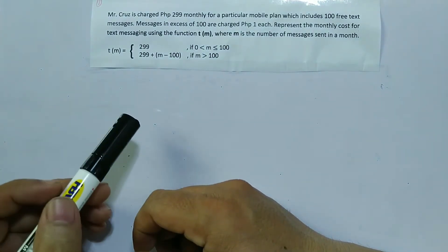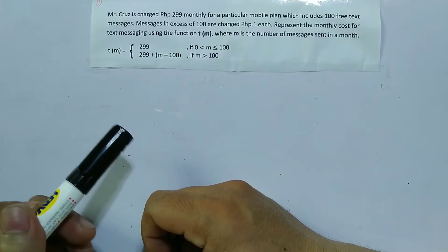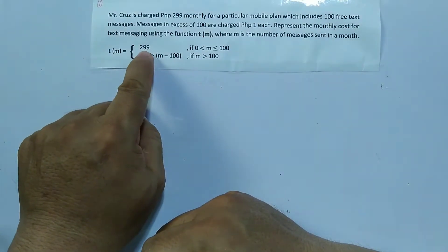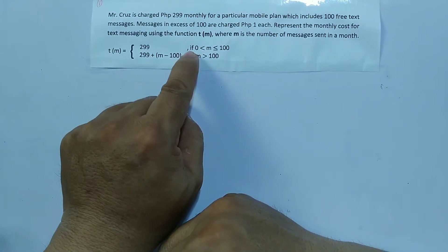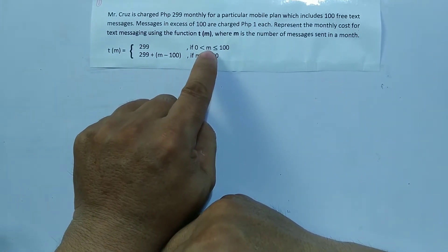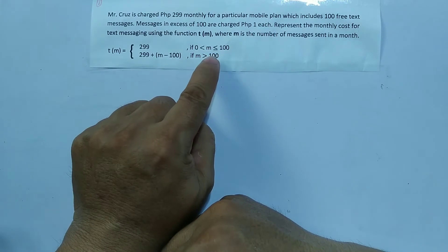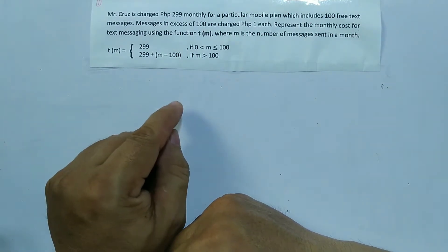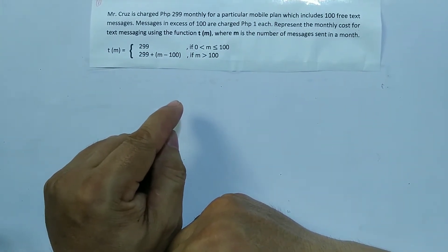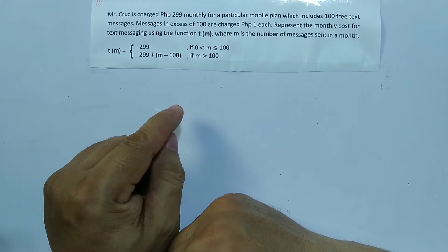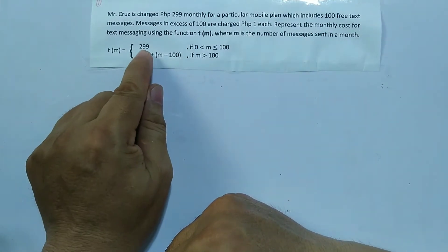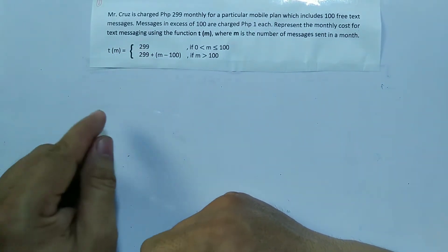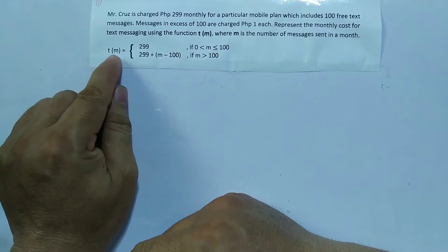We have two sub-functions here. The first one is t(m) = 299 if m is greater than zero or less than or equal to 100, meaning from one message up to 100 messages sent in a month, you will be charged 299 pesos. This will be your minimum cost.